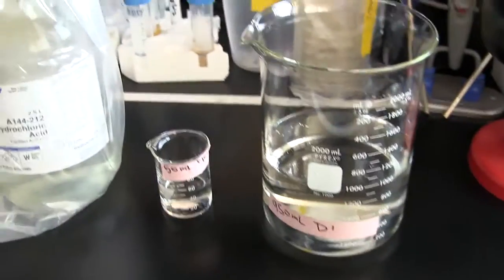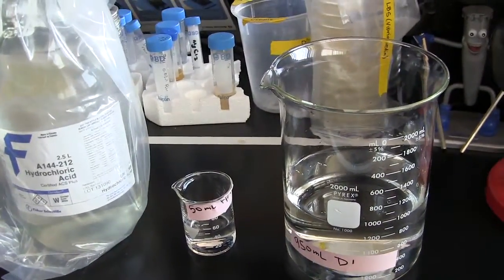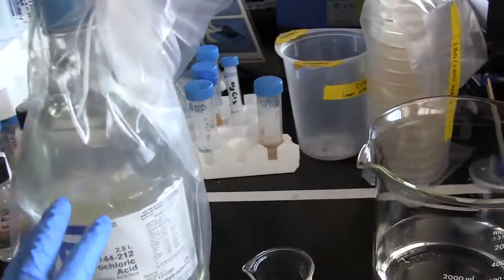What we're going to do when we make a 5% acid bath is make a 1 in 20 dilution of this concentrated stock.